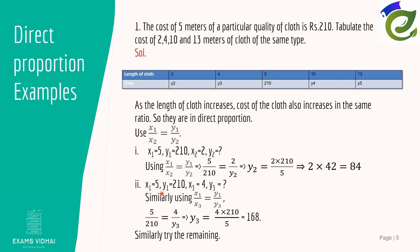Similarly for the second part, find the cost for 4 meters of cloth. Using x₁/y₁ = x₂/y₂: 5/210 = 4/y₃. Cross-multiplying gives 168 rupees. You can also use the 2/84 pair as x₁/y₁ and you will get the same answer.